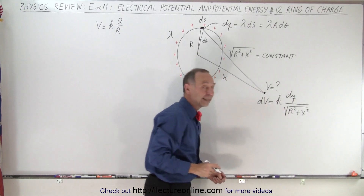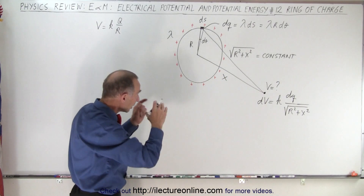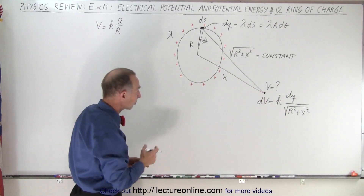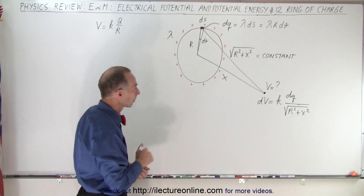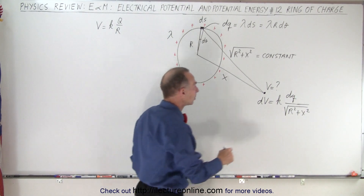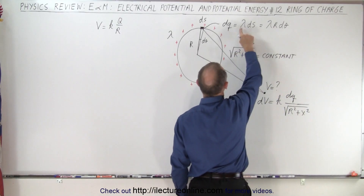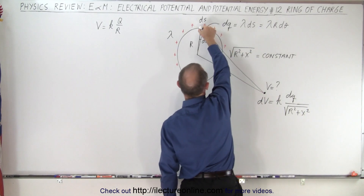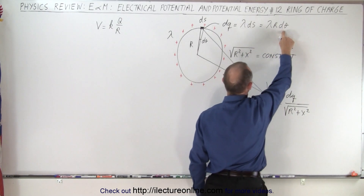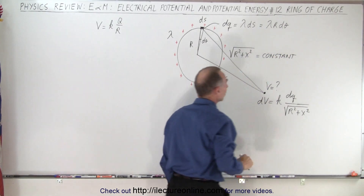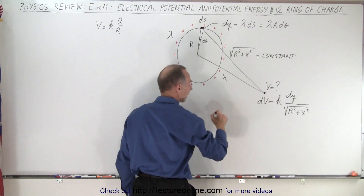Notice that the denominator is constant: r, the radius of the circle, is constant, and x, the distance away from the center, is constant. So the only thing that's variable is dq. Now dq is going to be equal to the linear charge density times the segment ds, and ds is defined as r dθ.